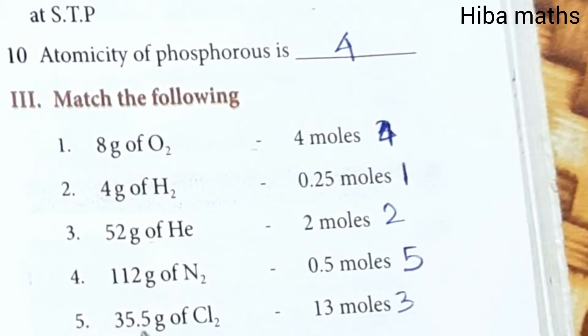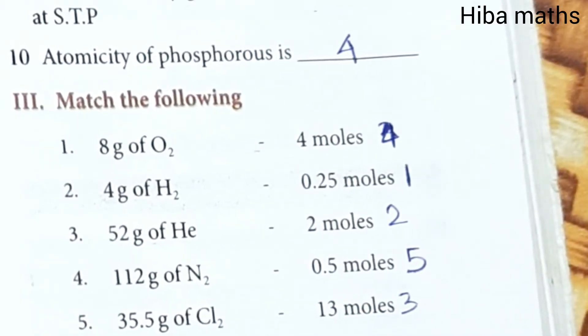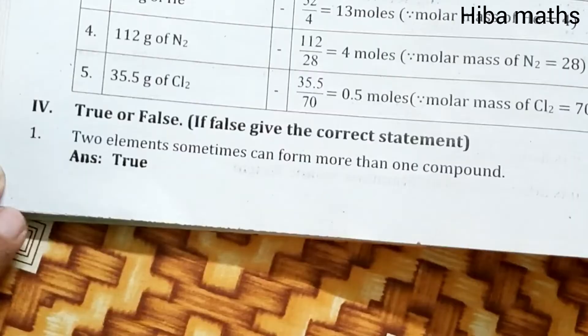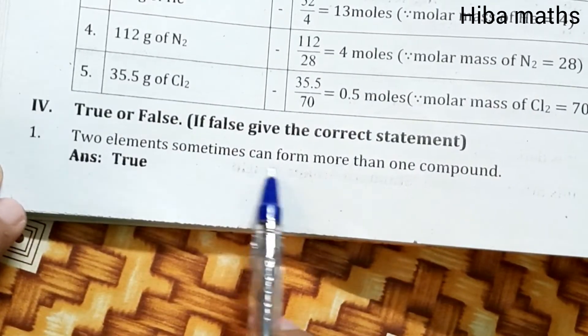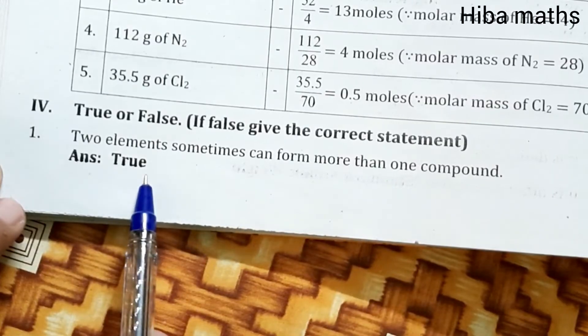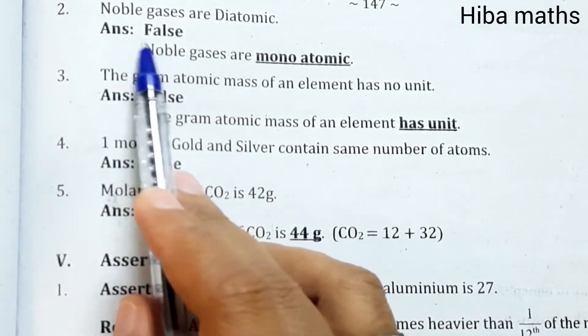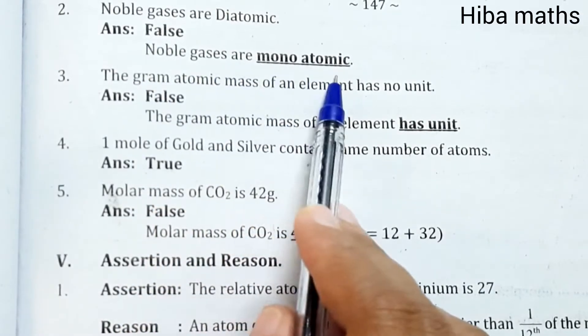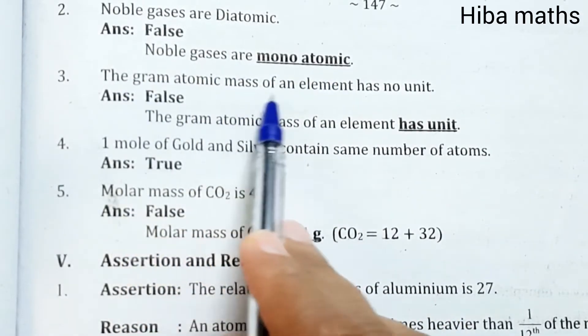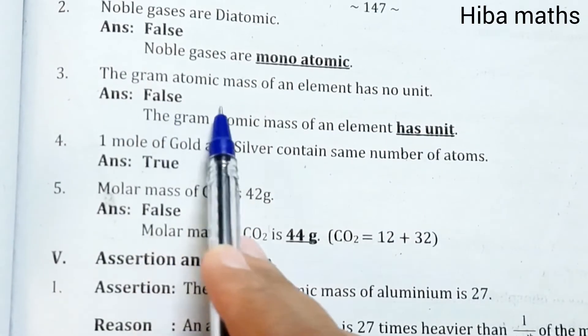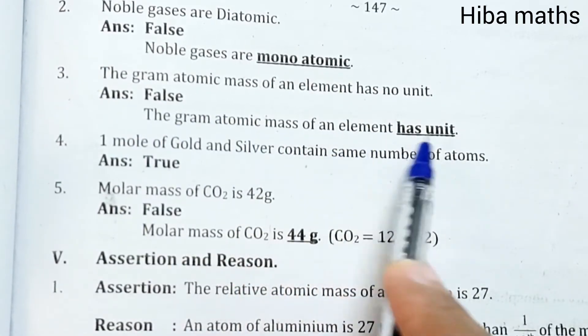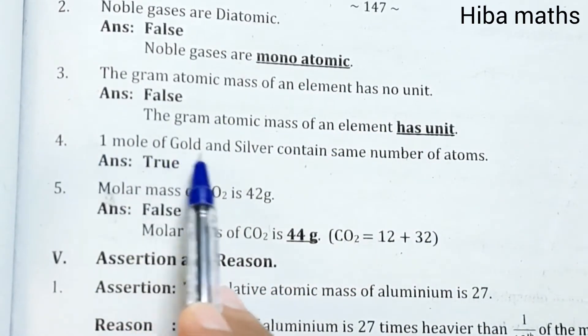True or false. First question: Two elements sometimes can form more than one compound - True. Second: Noble gases are diatomic - False. Noble gases are monoatomic. The gram atomic mass of an element has no unit - False. The gram atomic mass of an element has unit.